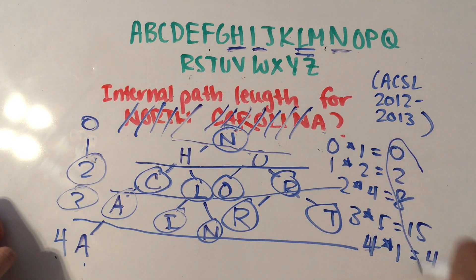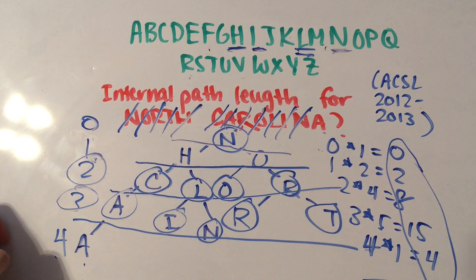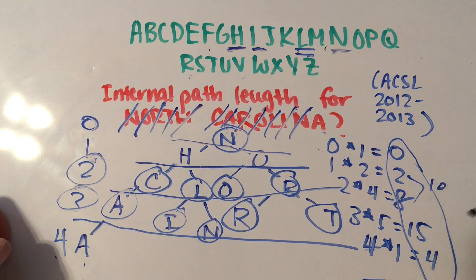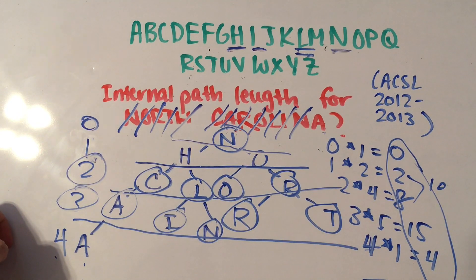Now we can add all of these up: 8 plus 2 is 10, plus 15 is 25, plus 4 is 29. And that's the answer.